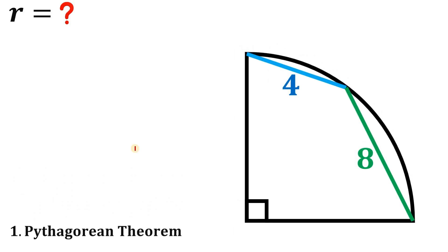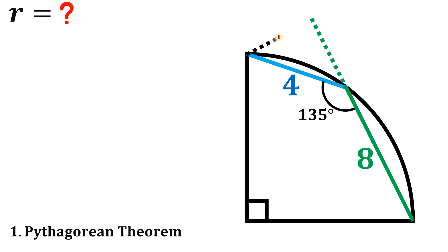Let's begin with the Pythagorean theorem. We have this angle right over here, and using the inscribed angle theorem, it intercepts 270 degrees of arc. So the measure of this inscribed angle is 270 divided by 2, which is 135 degrees. Now we extend the green segment, giving us 90 degrees at that position. The red angle and 135 degrees are a linear pair, so 180 minus 135 gives us 45 degrees — meaning these two angles must each be 45 degrees.